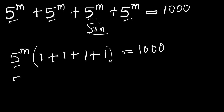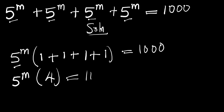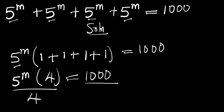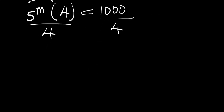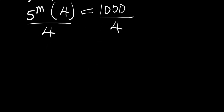So you have 5 raised to the power of m times 4, and this equals 1000. Let's divide both sides of this equation by 4 — the 4 cancels — and this gives you 1000 divided by 4, which is 250.